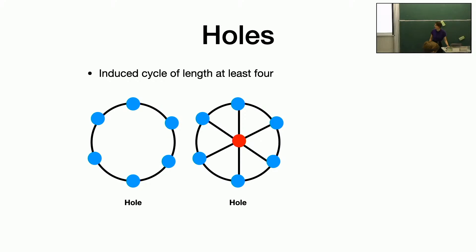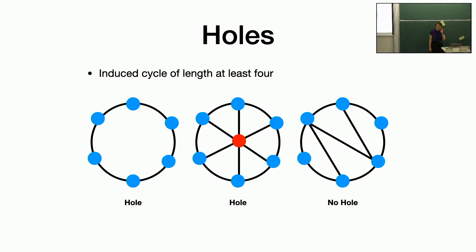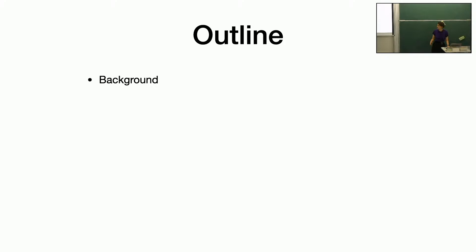So just to review, this would be a hole — the blue vertices on this would be a hole — and this graph doesn't contain a hole. The outline of the talk: at the beginning I'll talk about related work and history, and then I'll talk about the first result, which is an algorithm to determine whether an input graph contains a hole that is even and of length at least L for some constant L.